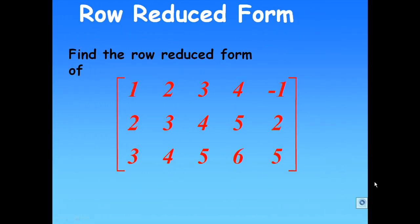Hi, for this recording, I'm going to show you how to find the row reduced form of the matrix: 1, 2, 3, 4, minus 1 / 2, 3, 4, 5, 2 / 3, 4, 5, 6, 5.